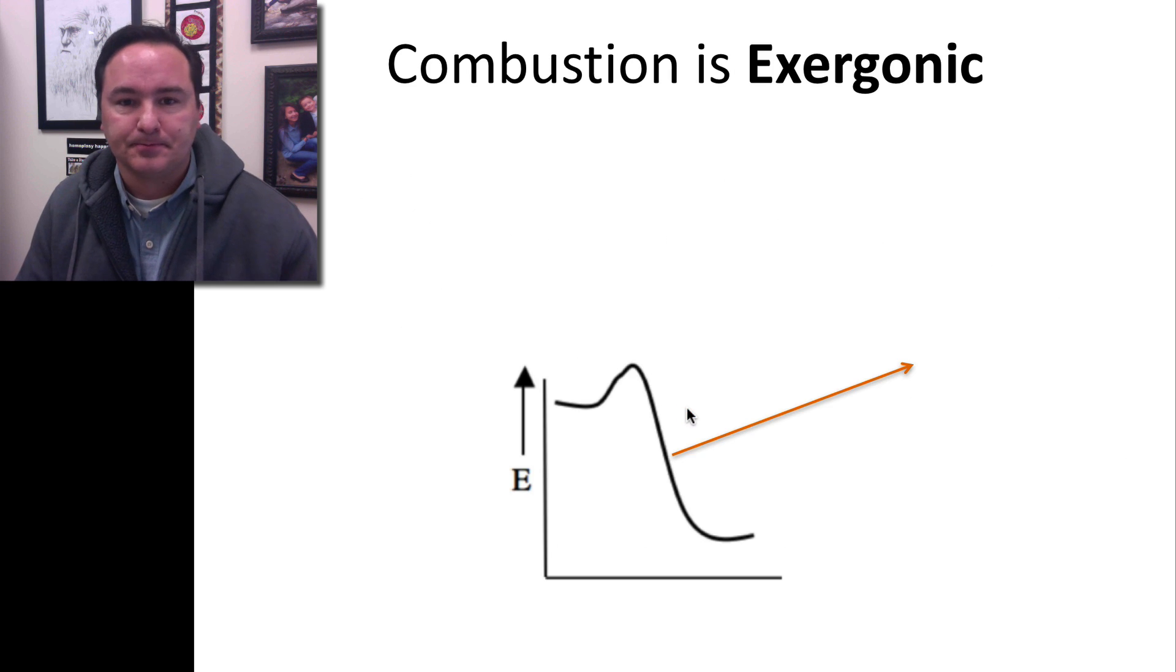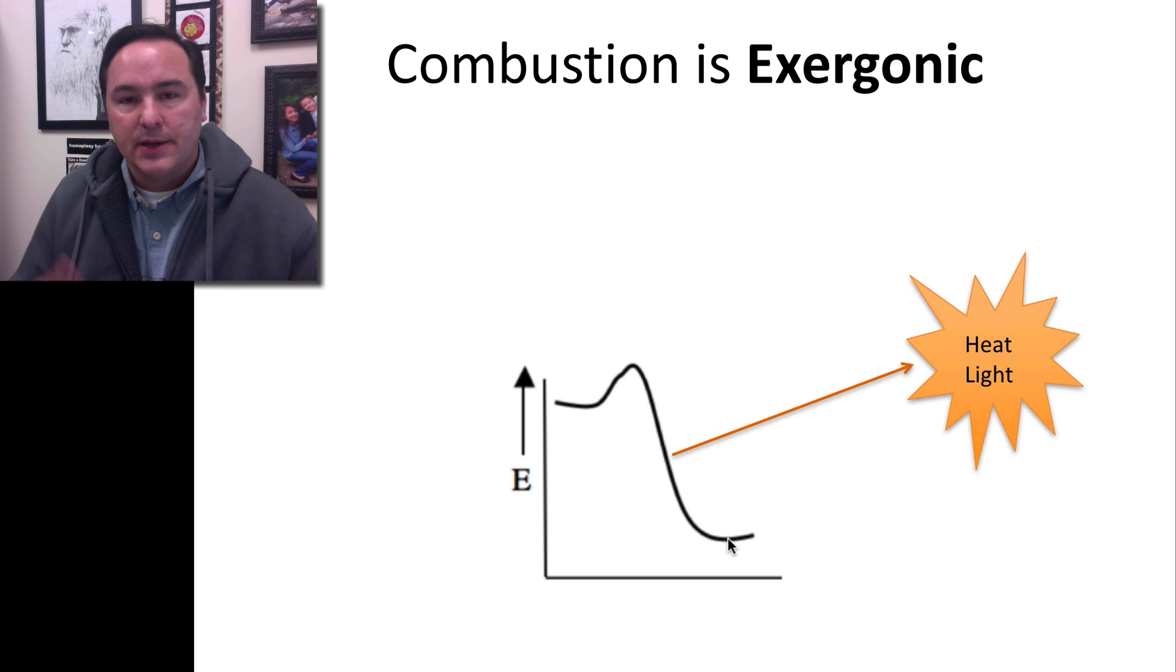The reason that it stopped combusting was because we had no more oxygen, so the reaction stopped. Combustion is an exergonic reaction. In an exergonic reaction, typically you need a little bit of energy to get the reaction going. But once it gets going, much more energy is released overall than what was needed to go into it. So you get this extreme burst of a lot of energy.